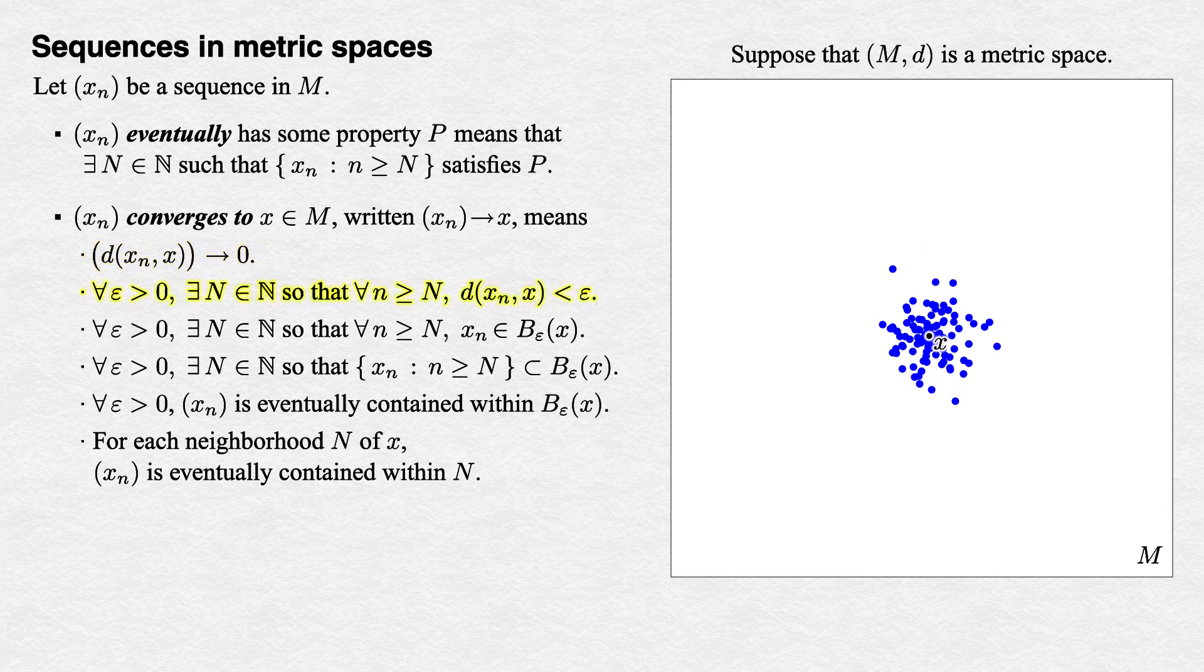All of these definitions are logically equivalent, so we can pick any one we like. Crothers favors the first, while I favor the second. Take your pick. Each one looks at convergence from a slightly different perspective using a variety of concepts we've seen, so it's worth understanding all of them.